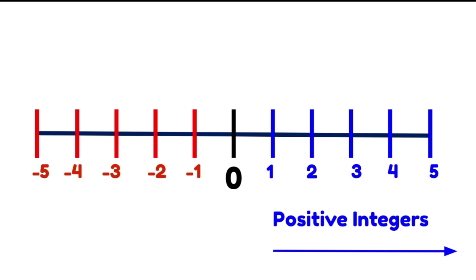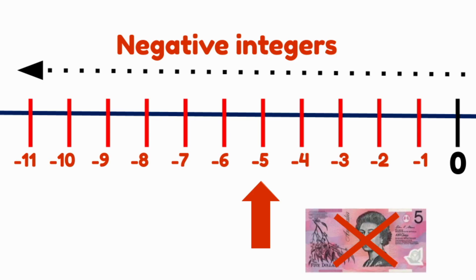Negative numbers are used to represent what we don't have or as a scale less than zero. For example, if I have no money in my wallet and I owe you five dollars, I would say that I have negative five dollars.